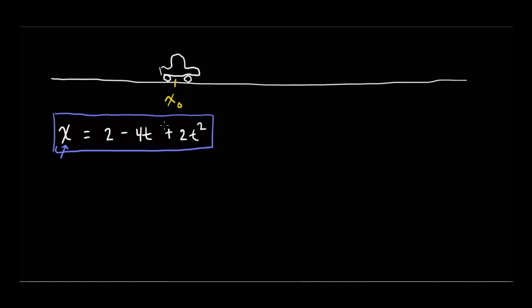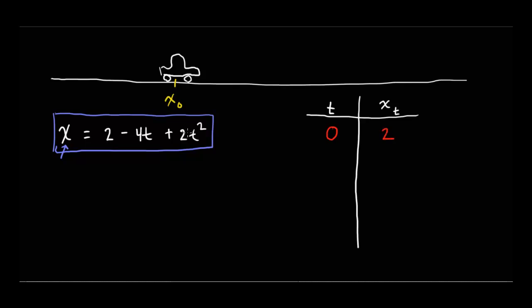A good way to get a sense of how this car is moving is to create a table of values. We'll plug in a variety of times and look at the x positions. At time zero, the two t-terms vanish and we get x equals 2 — so x-naught equals 2. Standard units for position are meters, so the car starts at the 2-meter mark. At t equals 1, we get 2 minus 4 plus 2, which equals zero. So after one second, the car is at the zero-meter mark, meaning it initially moved in the negative direction.